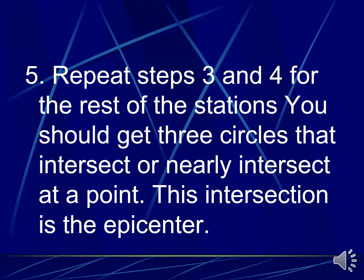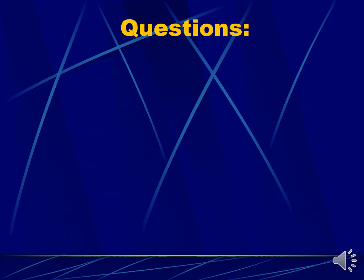Repeat steps three and four for the remaining stations. You should end up with three circles that intersect or nearly intersect at one point. That intersection point is what we call the epicenter — the approximate location of the earthquake epicenter is where all three circles meet.